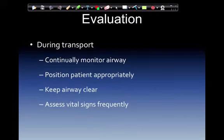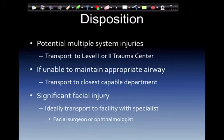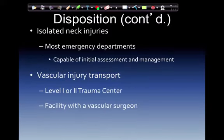In evaluation, continuously monitor the airway, position the patient appropriately, keep the airway clear, and assess vital signs frequently. Disposition: patients with potential multiple system injuries should be transported to a level 1 or level 2 trauma center. If unable to maintain the airway, transport to the closest capable department. Significant facial injuries should ideally be transported to a facility with a facial surgeon or ophthalmologist. Isolated neck injuries can be managed initially at most emergency departments, but vascular injuries require transport to a level 1 or level 2 trauma center or a facility with a vascular surgeon.